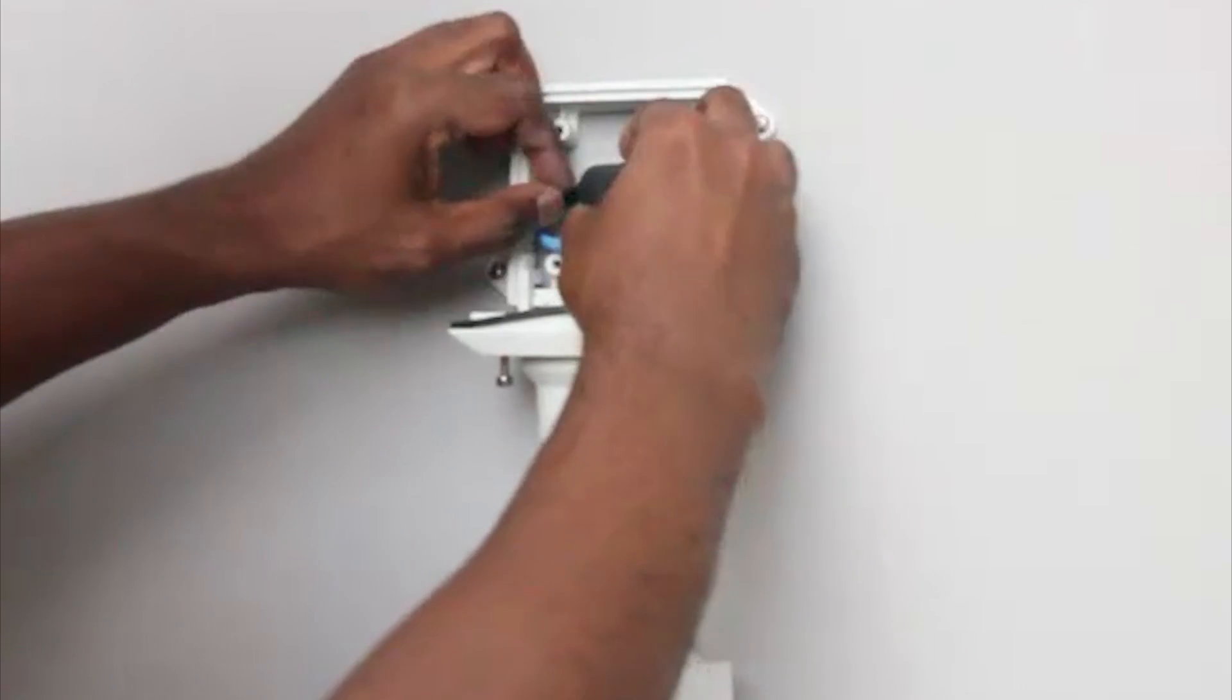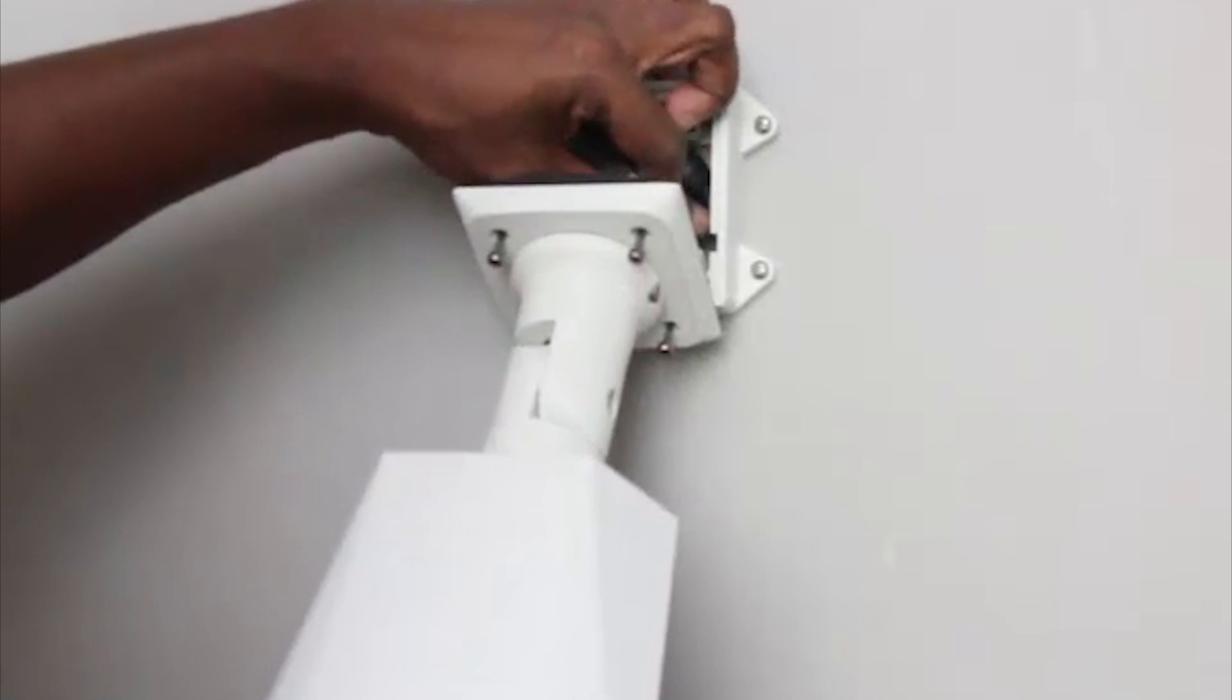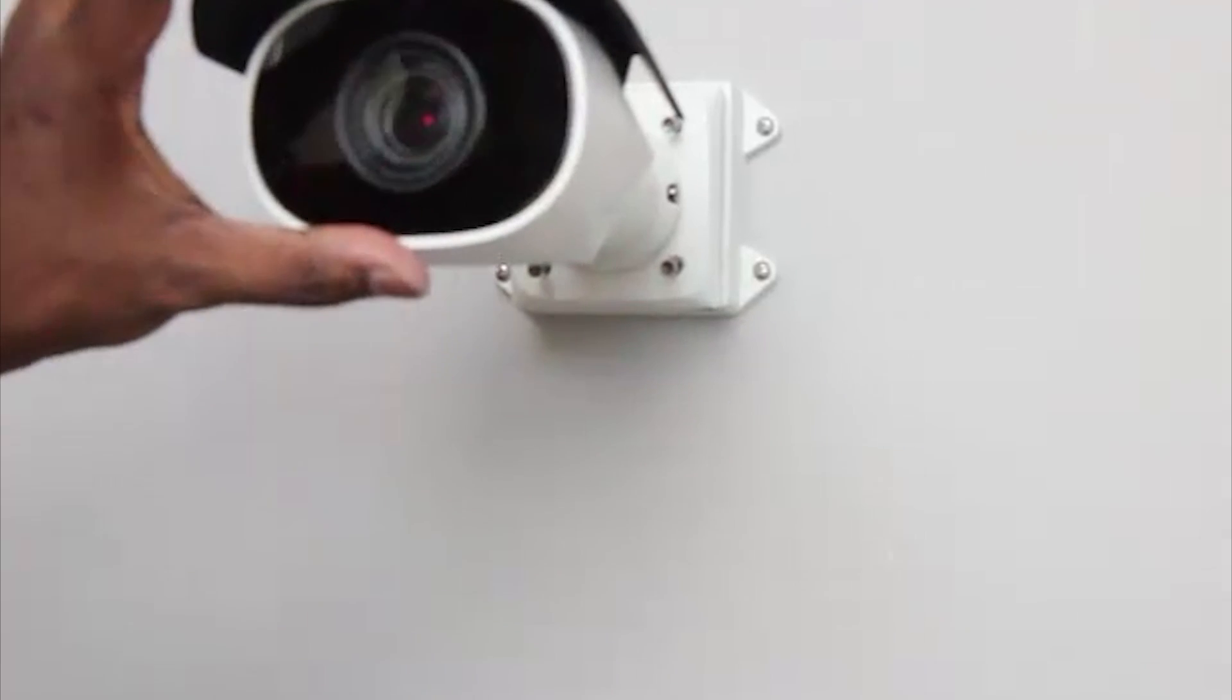You can tuck any extra cable length into the cable entry hole. Raise the camera until it covers the mounting bracket. Use a T20 pin-in Torx driver to fasten the camera to the bracket.